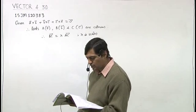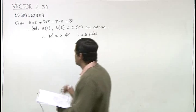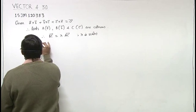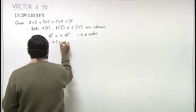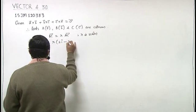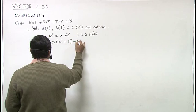AC is given as 2i cap minus 3j cap plus 6k cap. So BC is lambda times 2i cap minus 3j cap plus 6k cap.